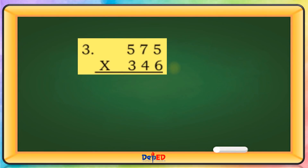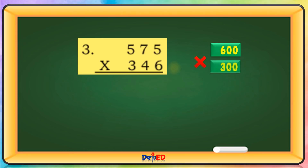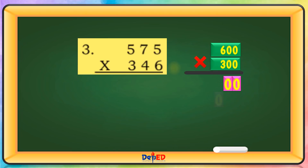575 will be rounded off to 600 and 346 will be rounded to 300. 600 times 300 equals — let's copy the four zeros. And then multiply 3 times 6 equals 18. The estimated product is 180,000.